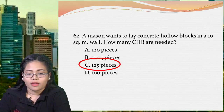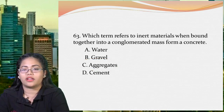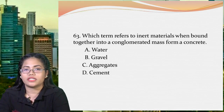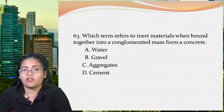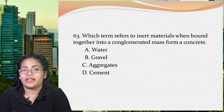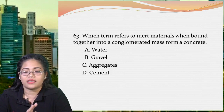Next question: which term refers to inert materials that, when bound together in a conglomerated mass, form concrete? A: water, B: gravel, C: aggregates, or D: cement. As mentioned earlier, coarse and fine aggregates are the inert materials that create a conglomerated — that is, compact — mass. Water is used for mixing; gravel is an example of coarse aggregates; and cement is a bonding agent. The correct answer is letter C, aggregates.